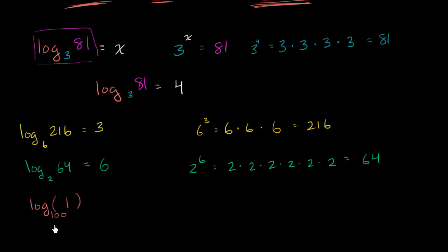Well, this is asking ourselves what power do I have to raise 100 to to get to 1? So let me write this down as an equation. So if I set this to be equal to x, this is literally saying 100 to what power is equal to 1? Well, anything to the 0th power is equal to 1. So in this case, x is equal to 0. So log base 100 of 1 is going to be equal to 0. Log base anything of 1 is going to be equal to 0, because anything to the 0th power, and we're not talking about 0 here, anything to the 0th power that's not 0 is going to be equal to 1.